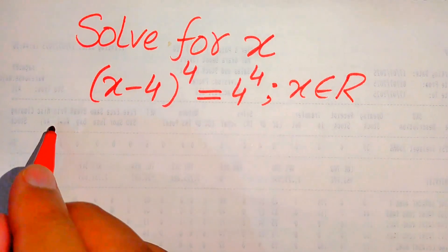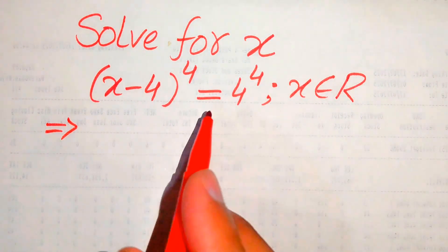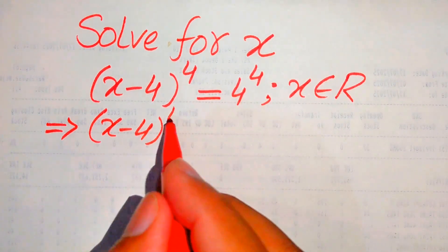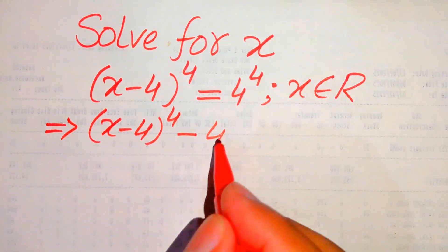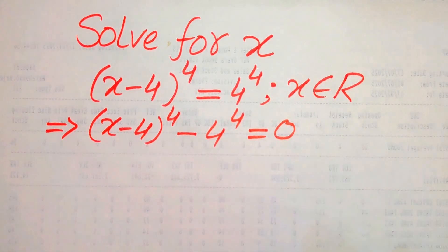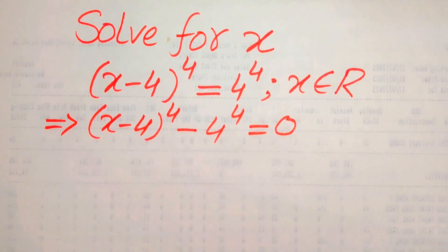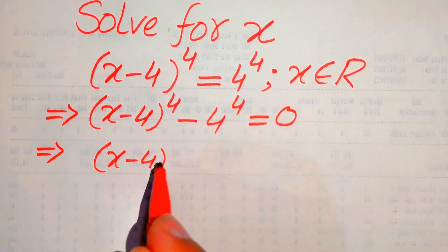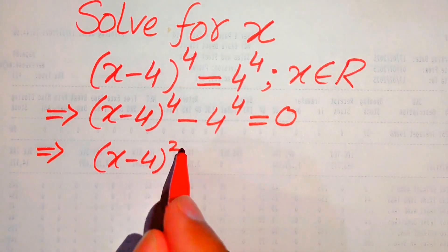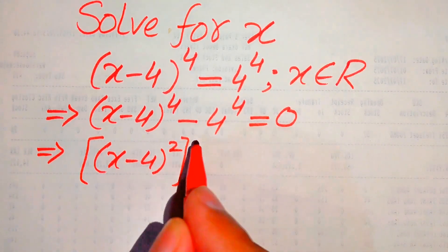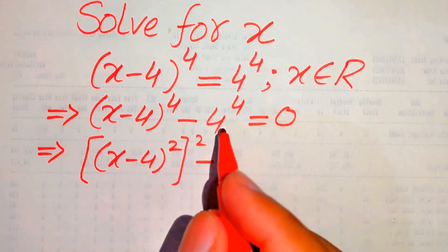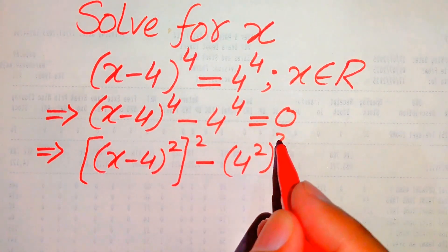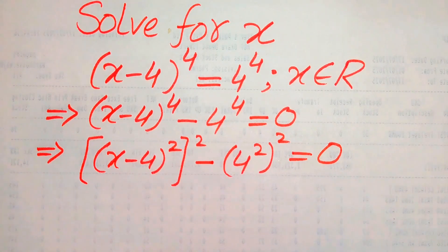The very first thing we are going to do is rewrite this equation by moving the right-hand side to the left-hand side, so it becomes (x minus 4) to the power of 4 minus 4 to the power of 4 equals 0. We then rewrite this as [(x minus 4) squared] squared minus [4 squared] squared equals 0.